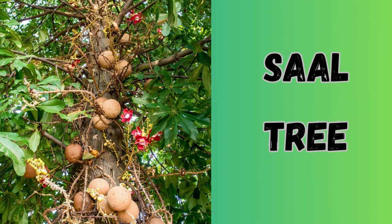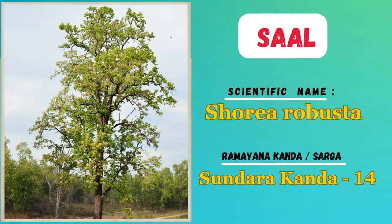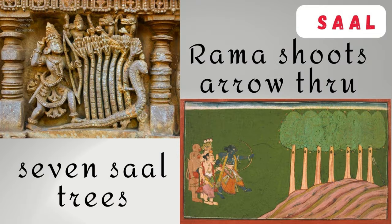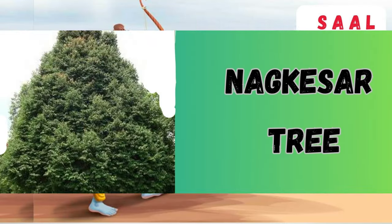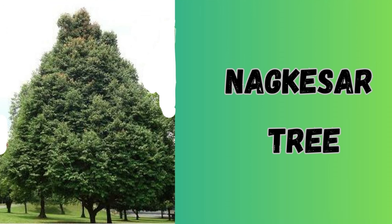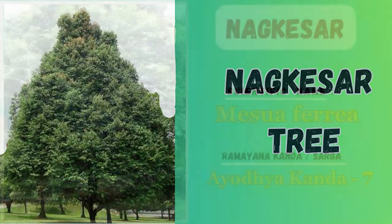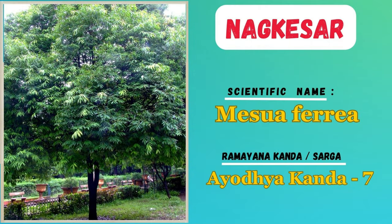Sal — the Sal tree is mentioned in the Ramayana as a tree with great cultural and religious significance. Lord Rama is said to have cut down seven Sal trees with his arrow to prove to Vali that he could defeat his elder brother.